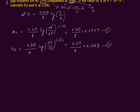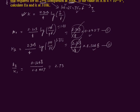Now divide the second equation by the first equation. K2 upon K1 — since the time values are the same in both equations they cancel out. K2 divided by K1 equals 0.1248 divided by 0.0457, which gives 2.73. This is the ratio K2 to K1.